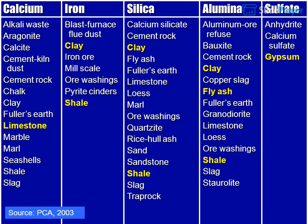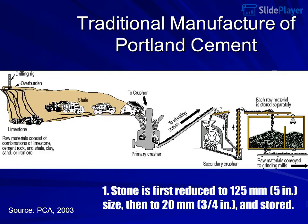Sulfate, often in the form of gypsum, is added during the grinding of the clinker to regulate the setting time of the cement and to improve shrinkage and strength development properties.